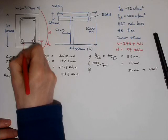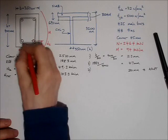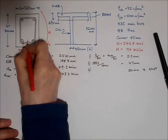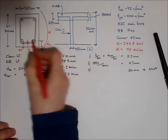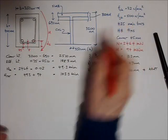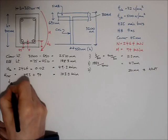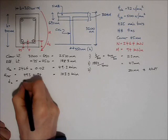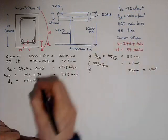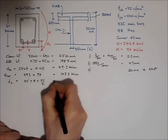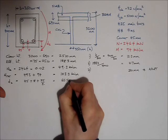Well, I know what the cover is. The cover is 45 mil. I know the thickness of the tie bars. The ties are 8 mil. And I know that the main bars are 25 mil diameter. So D2 is going to be 45 plus 8 plus 25 over 2. That gives me an answer of 65.5 millimetres.